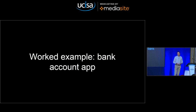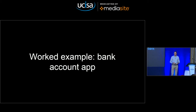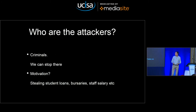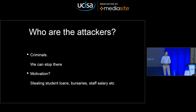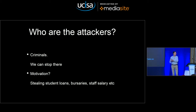A somewhat better example. We have an application that lets the student log in and update their bank account details, so we can send them bursaries, student loans, hardship funds and other money. Why would anyone want to attack that? Obviously — criminals wanting to steal money. This is a very live attack; universities have lost quite reasonable amounts of money this way. It's not just students — it's staff salaries as well. Some professors had their salary stolen and hadn't noticed for several months. The NSA aren't interested. We don't have to worry about the individual low-skilled attacker. Just worry about the criminals and base your threat model on that attack scenario.